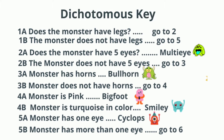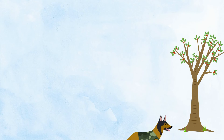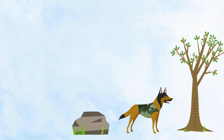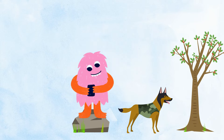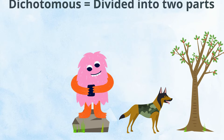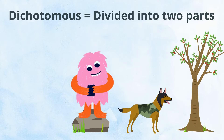A dichotomous key is a tool that allows the user to determine the identity of items. This can include trees, animals, rocks, and even monsters. Dichotomous means divided into two parts, therefore each question is divided into two parts.